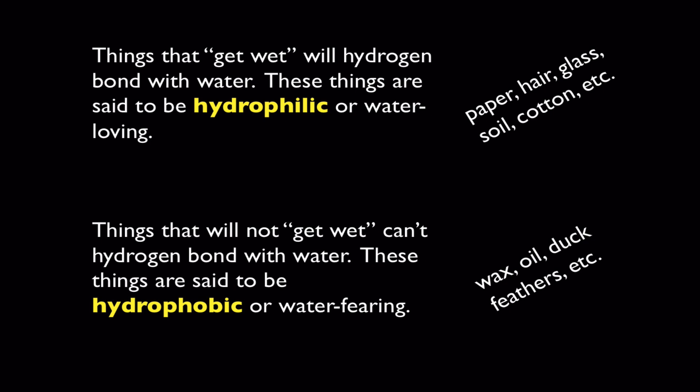When things get wet and form hydrogen bonds, we say that those things are hydrophilic, which means they attract water. The word hydrophilic means water-loving. Some common examples of hydrophilic materials are paper, hair, glass, soil, cotton, and so on. Anything that will absorb water and get wet, we say that it's hydrophilic.